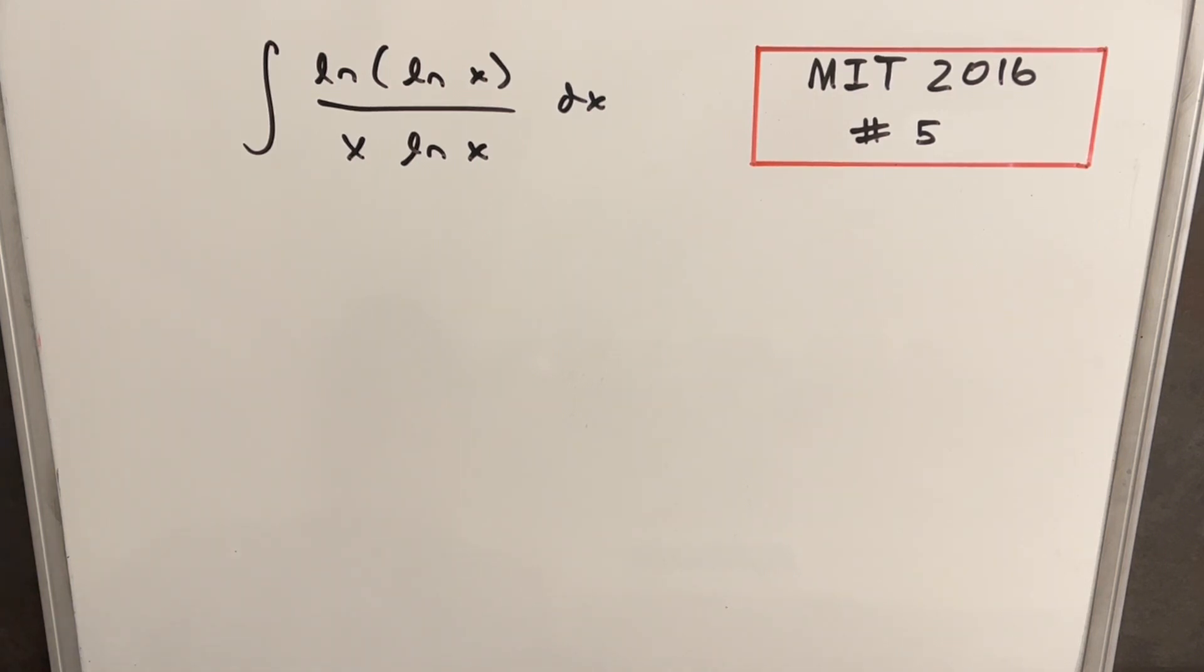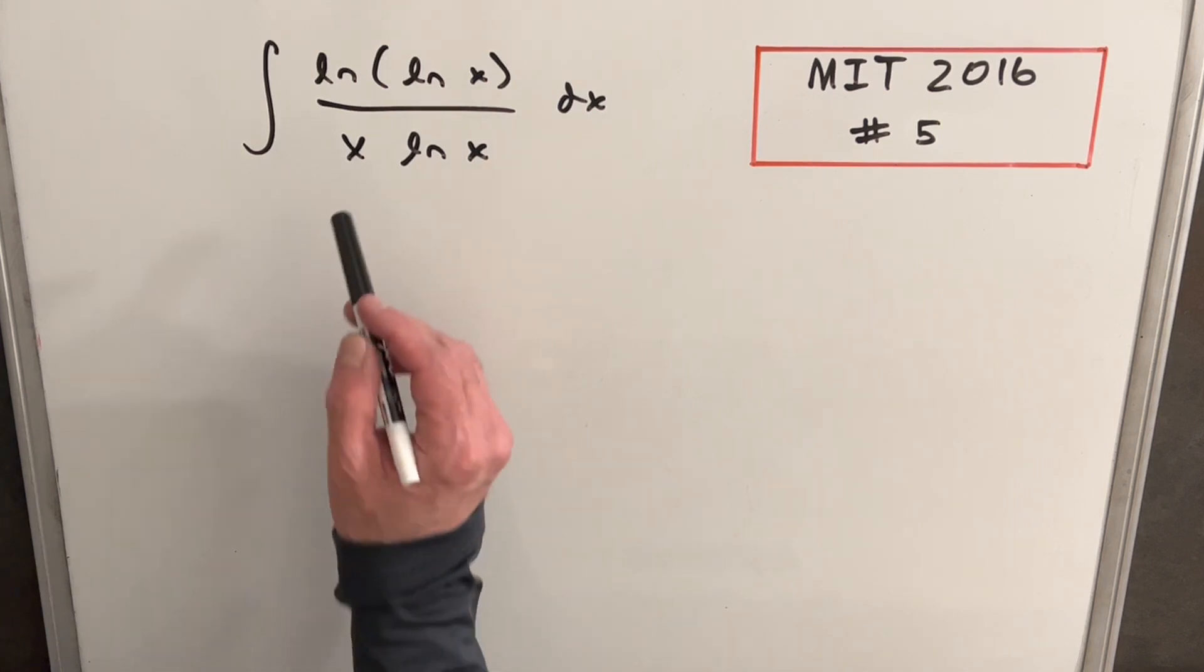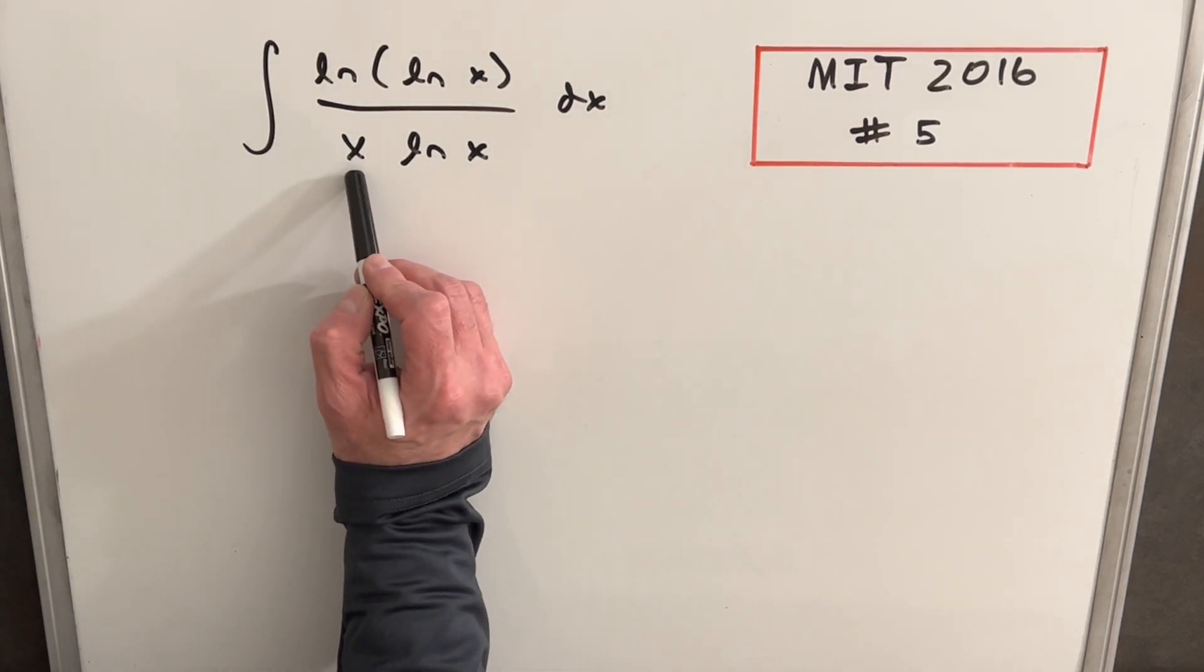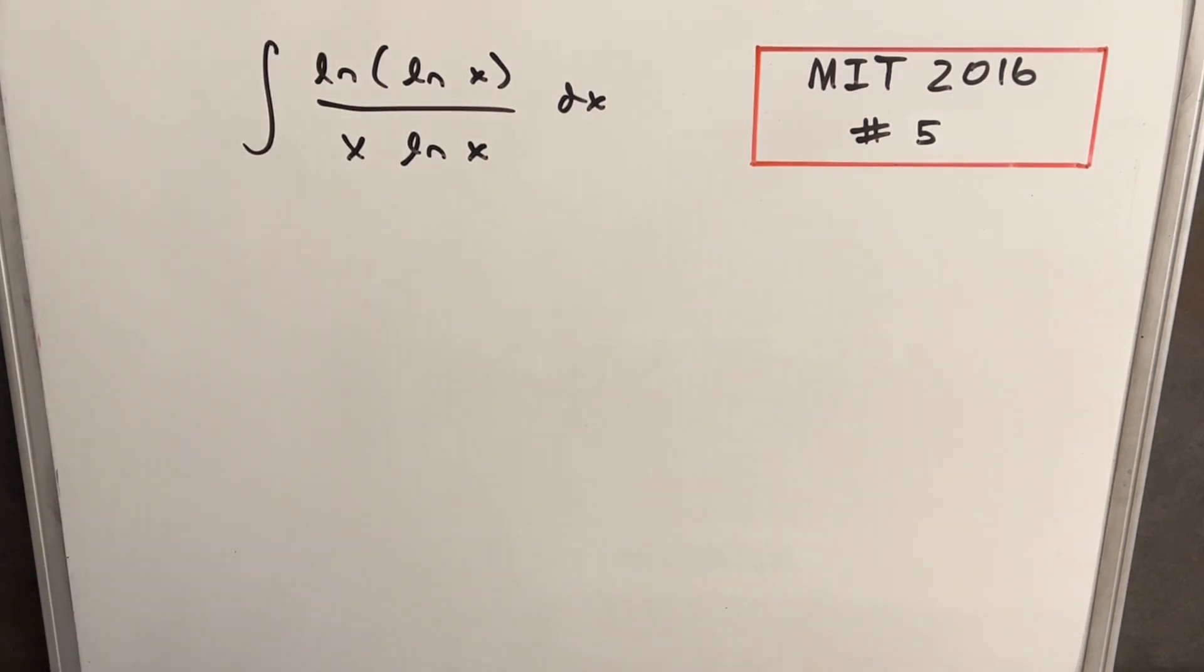In this case, I'm definitely thinking a u-substitution is going to work. We notice we can look at this x in the denominator as 1 over x, and remember that the derivative of ln x is 1 over x.